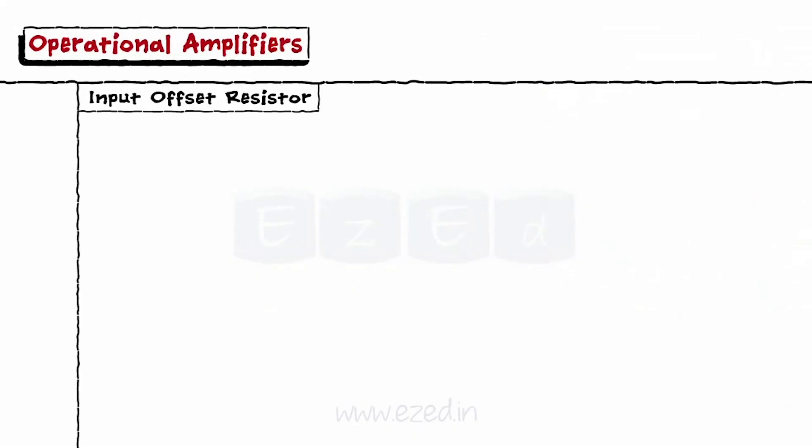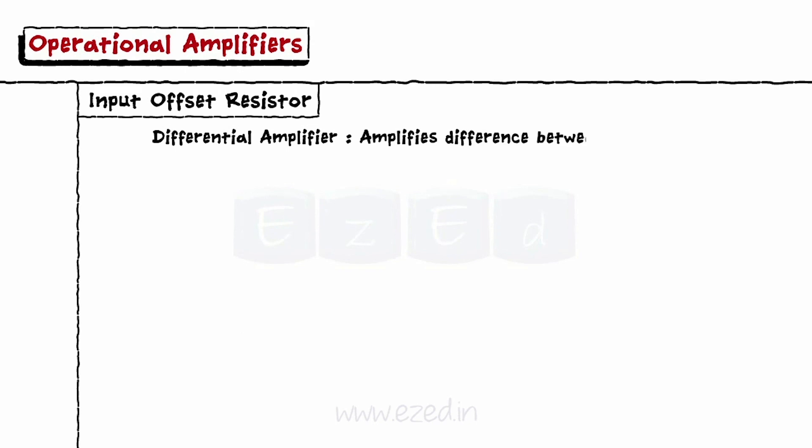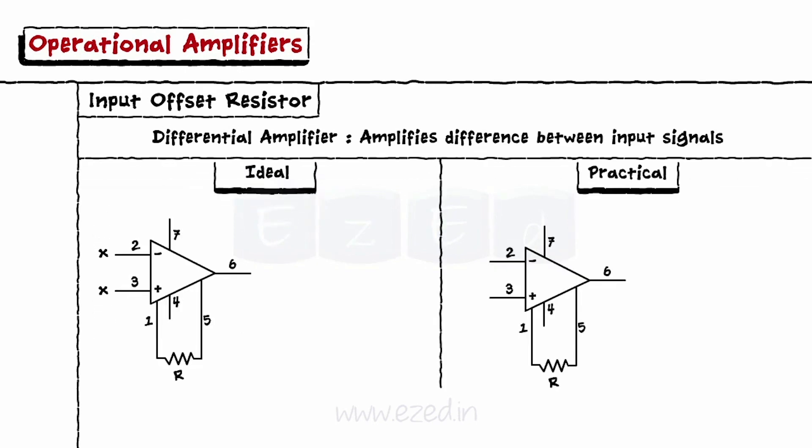Let's see the use of an offset resistor now. An op-amp is also called a differential amplifier because it amplifies the difference between the input signals. Ideally, when both inputs are the same, the output should be zero. But practically, there exists a non-zero output.